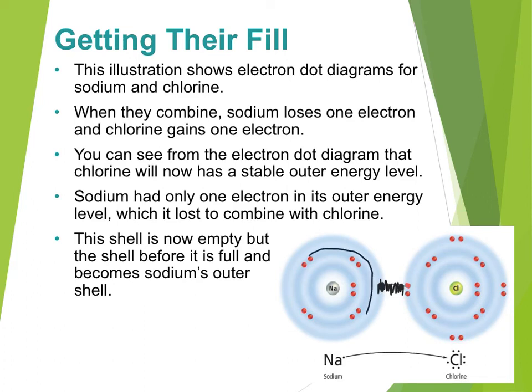Sodium's new outer shell now has those eight electrons — two, four, six, eight in that outer shell. It got rid of the third shell altogether, so the second shell became its outer shell. In the case of chlorine, chlorine added this extra electron to give itself one, two, three, four, five, six, seven, eight electrons in its outer shell, which is now completely full. That is one way in which bonding can work.